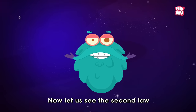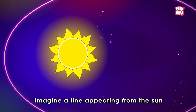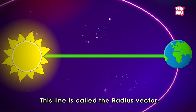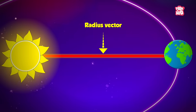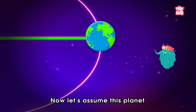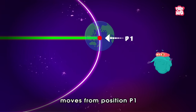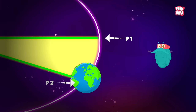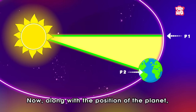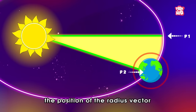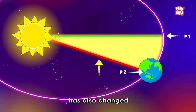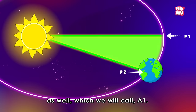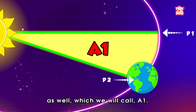Now let us see the second law. Imagine a line appearing from the sun and joining a planet. This line is called the radius vector. Now let us assume this planet moves from position P1 to position P2 in a certain interval of time. Along with the position of the planet, the position of the radius vector has also changed, and its movement has covered a certain area, which we will call A1.